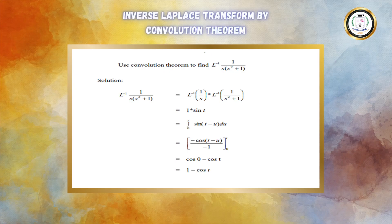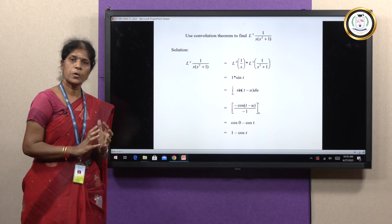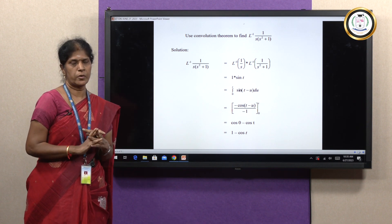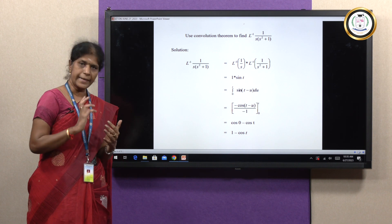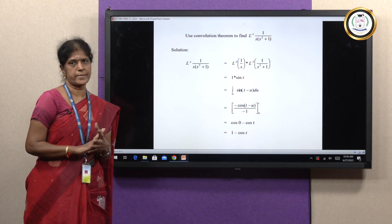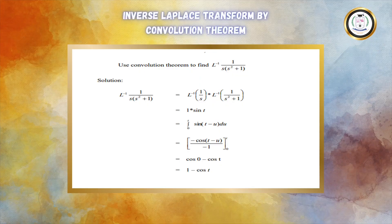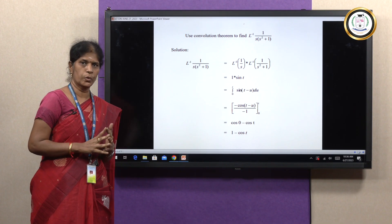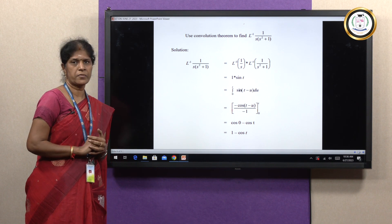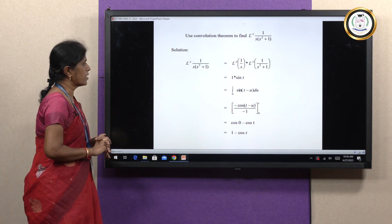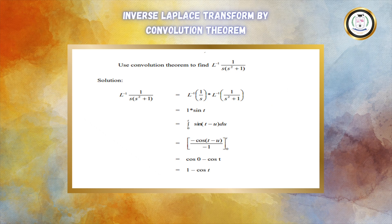Example 1: Use the convolution theorem to find L⁻¹{1 / [s(s² + 1)]}. When using the convolution theorem to find the inverse Laplace transform, the denominator has two factors, so we can apply the convolution theorem. What is the convolution theorem? L⁻¹{F(s)·G(s)} = L⁻¹{F(s)} * L⁻¹{G(s)}. Here, L⁻¹{1 / [s(s² + 1)]} — how are we going to split F(s) and G(s)?